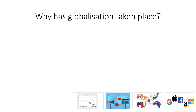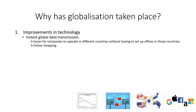So why has globalization taken place? Firstly, improvements in technology. Instant global data transmission through the internet has made it easier for companies to operate in different countries without having to set up expensive offices in those countries. This is one of the reasons why multinational companies — MNCs — have increased in number. The rise of the internet has also brought the rise of online shopping, which has allowed consumers to easily access goods from around the world from the comfort of their own home.